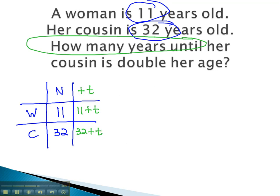Using the rest of the information in the problem, we want the cousin to be double the woman's age. Cousin will be, or equals, double 2 times the woman's age.